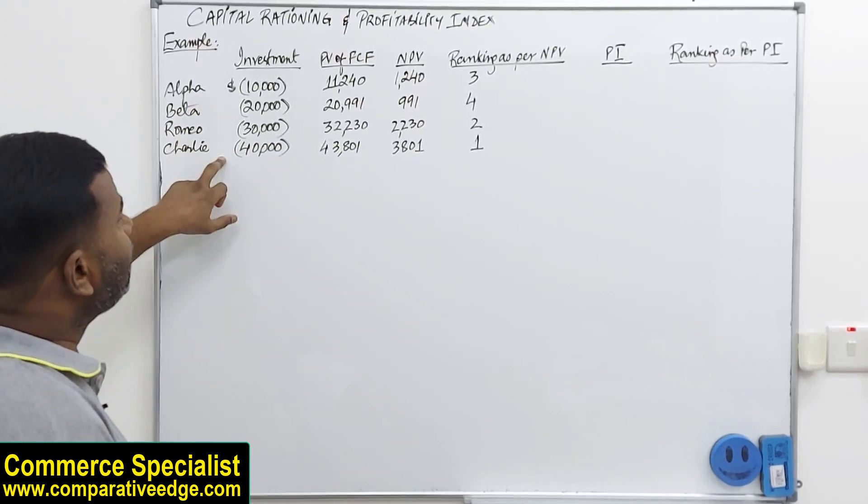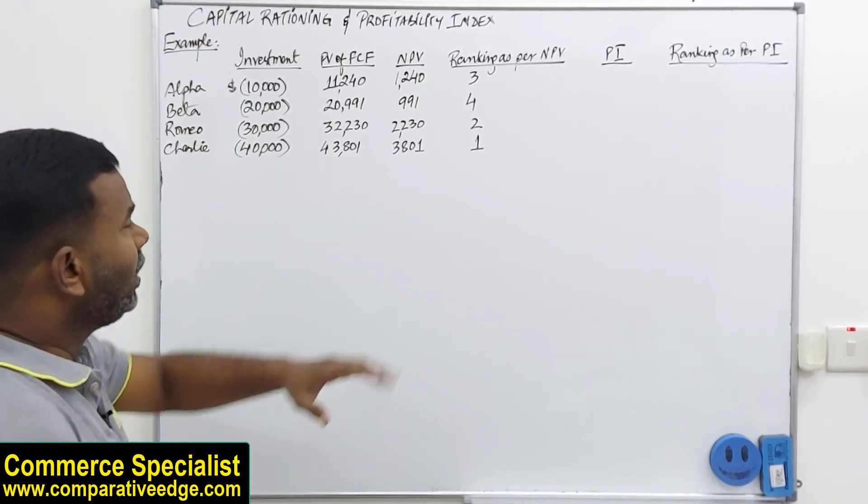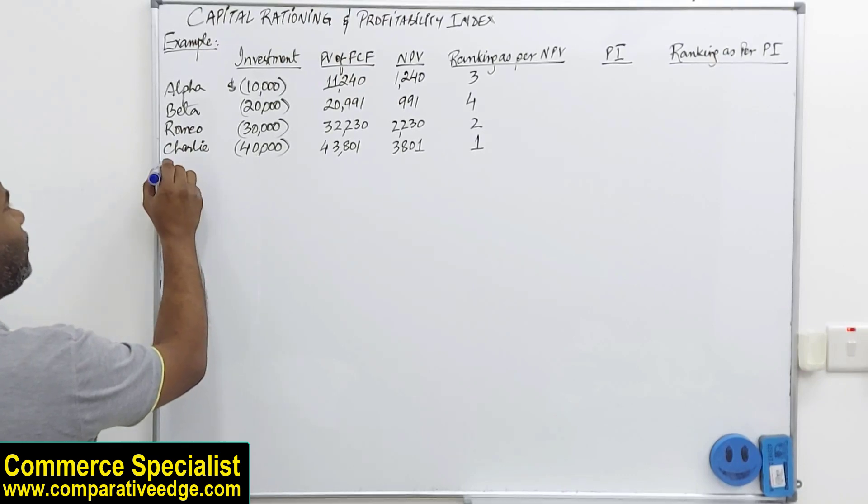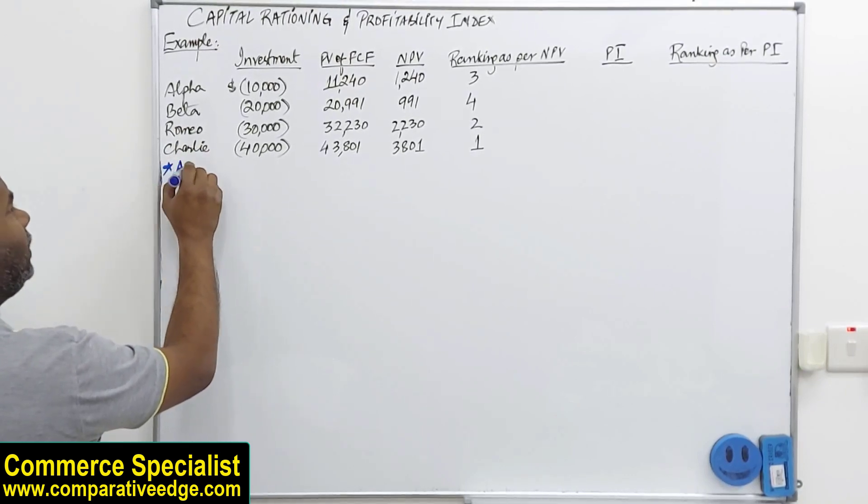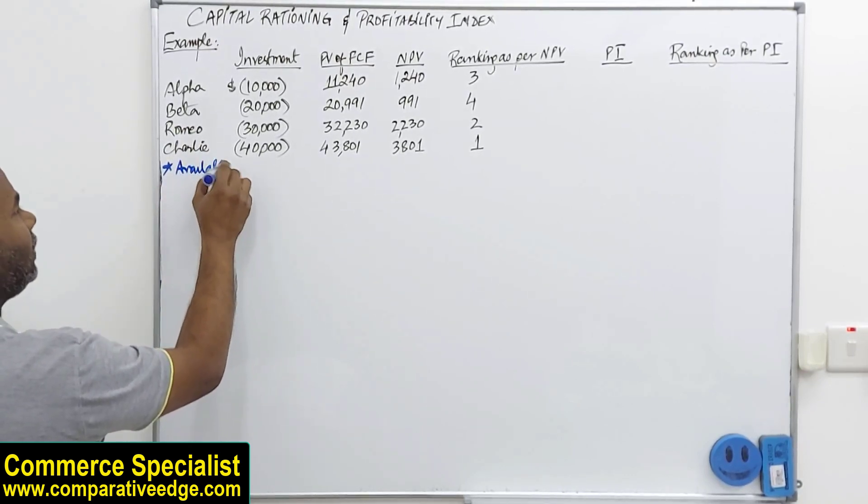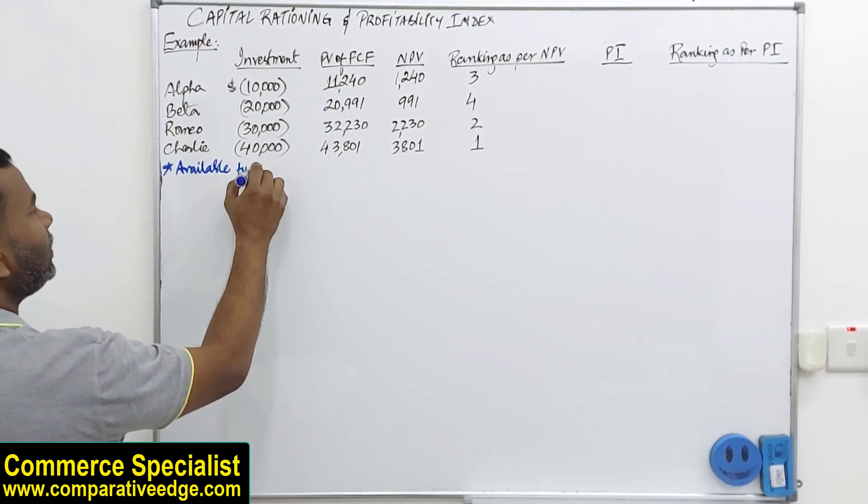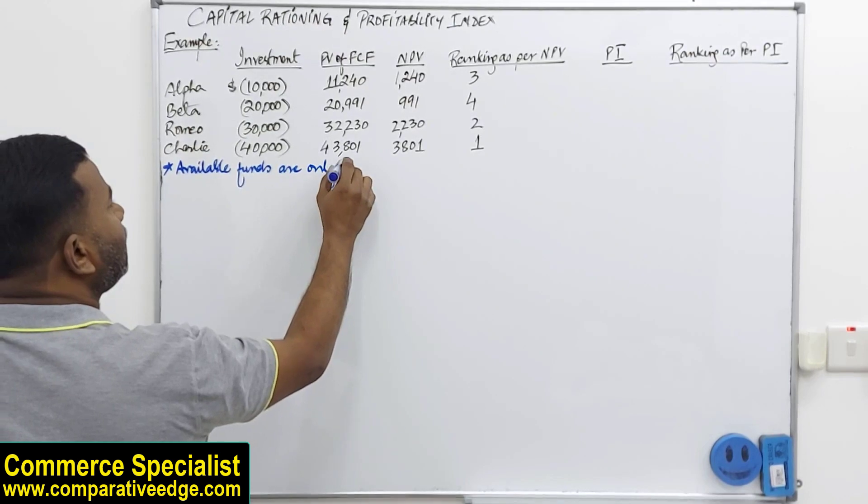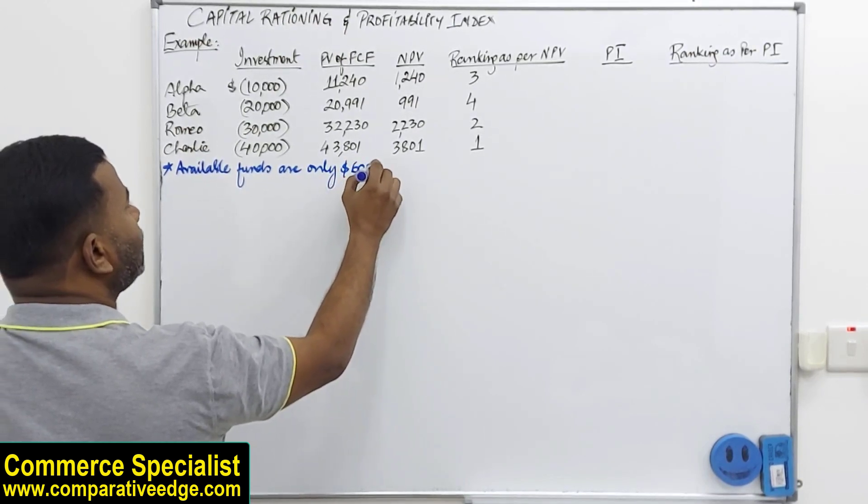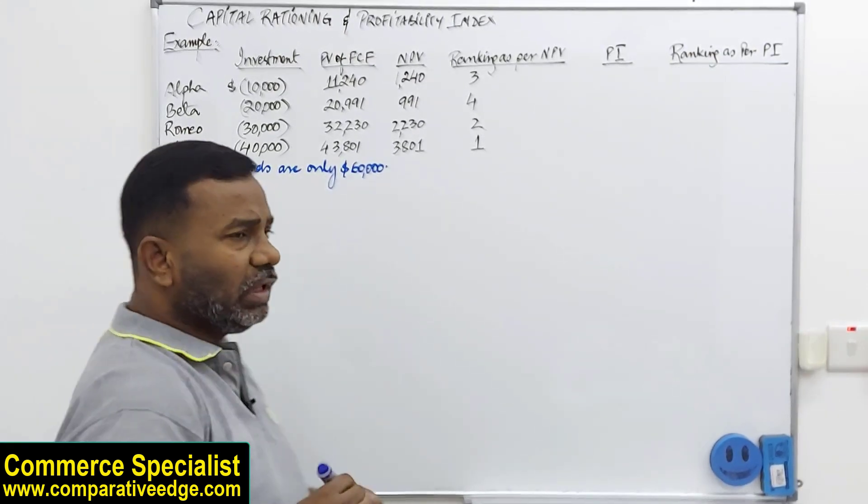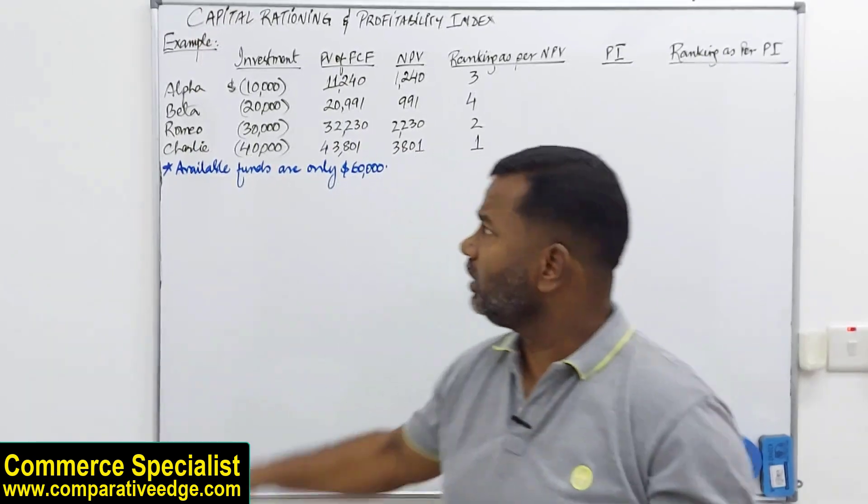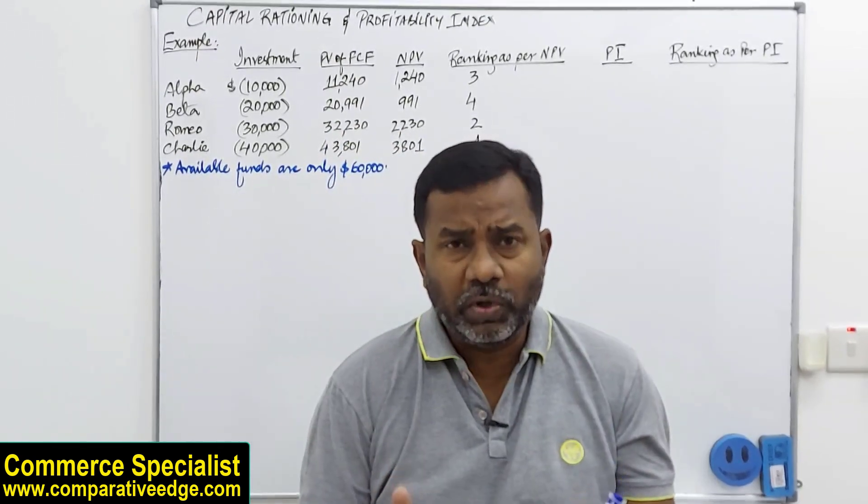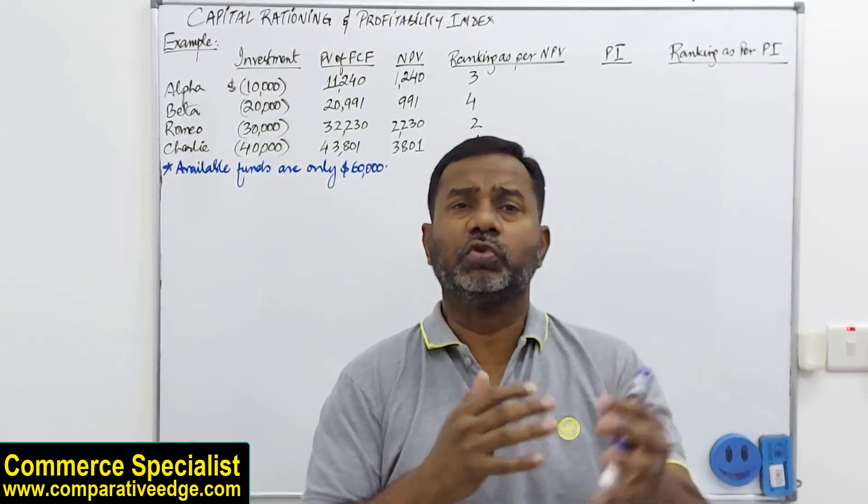100,000 is required to invest in all of them. But what if I give you a constraint that available funds are only 60,000 US dollars? If that is the case, we cannot invest in all of them. So normally what people do is they pick and choose.